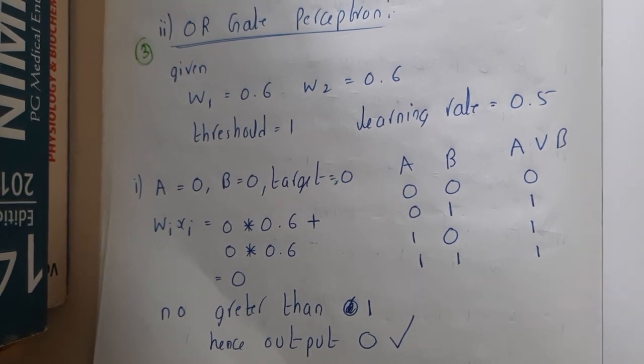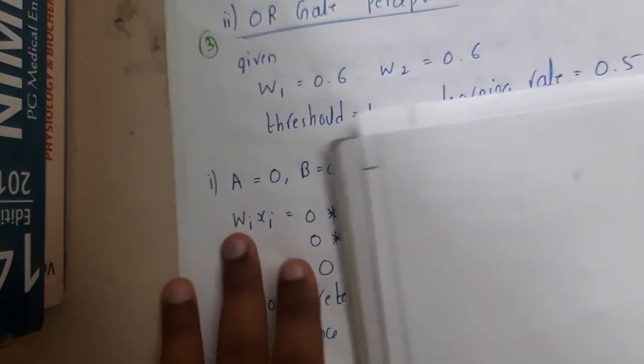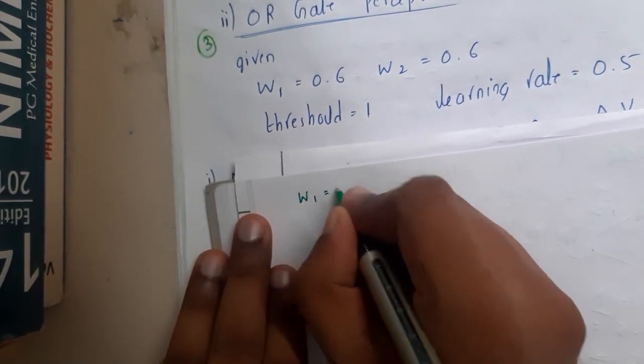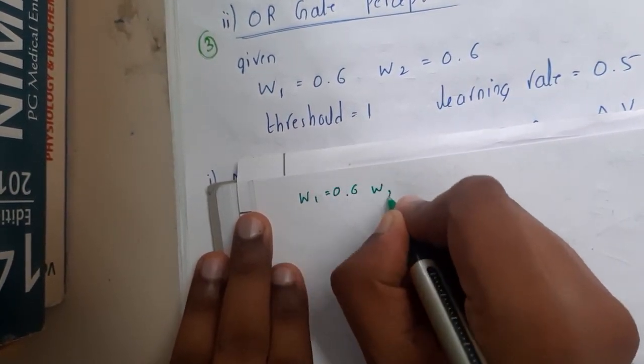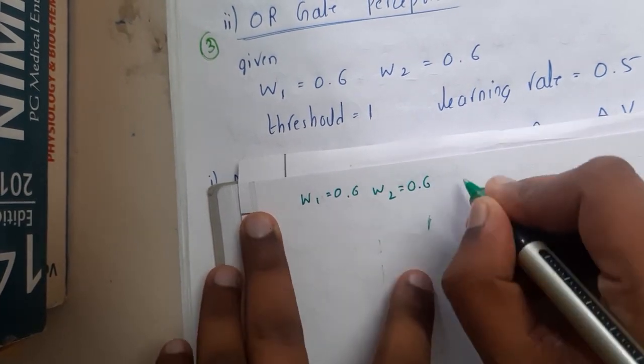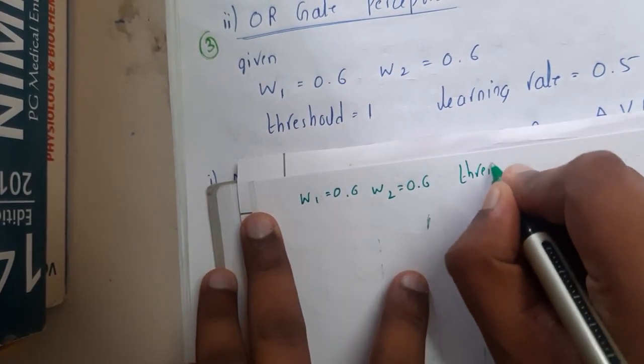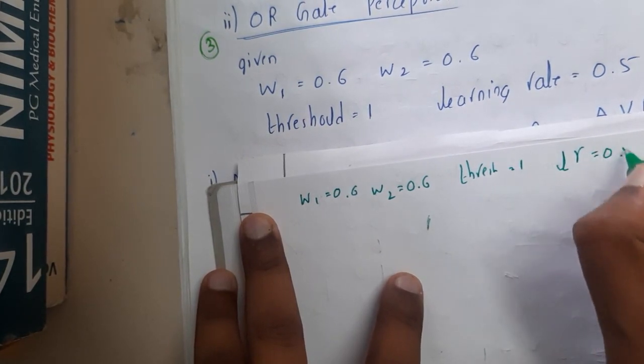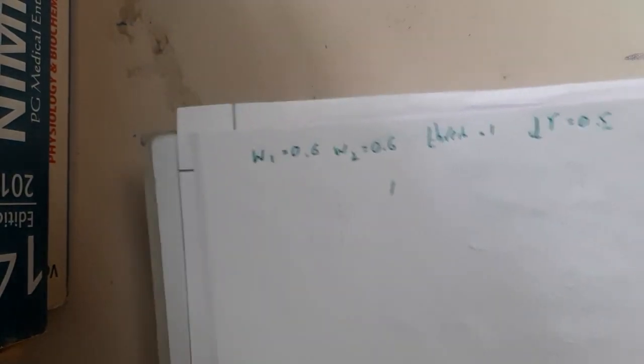Let's start with the OR gate. The first weight is 0.6, the second weight is 0.6, so they gave the same weights. The threshold is 1, and the learning rate is 0.5. First of all, you need to draw your OR gate values.